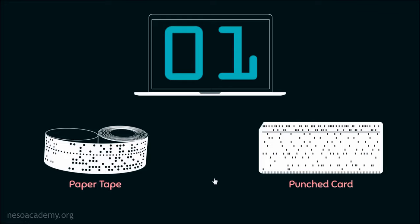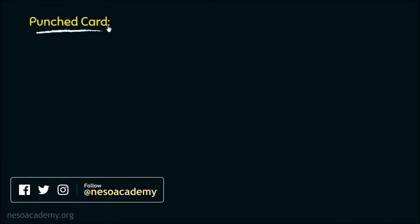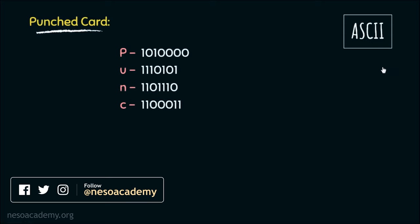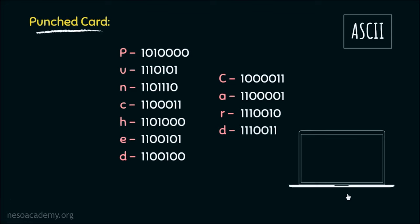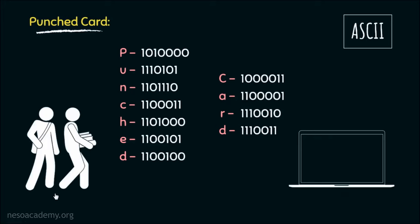Let me show you how. Let's take this word, 'punched card.' If we convert this into its equivalent binary using ASCII standard — ASCII stands for American Standard Code for Information Interchange — it becomes this. Now this is the format which computers can process directly, but for us it is almost impossible. Even if it becomes possible for any human to encode instructions like this, it is undoubtedly time consuming.